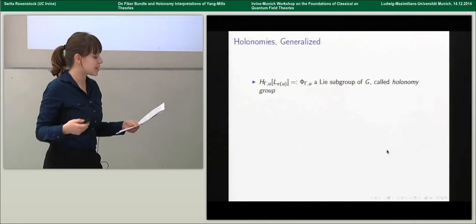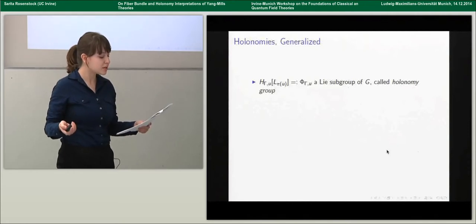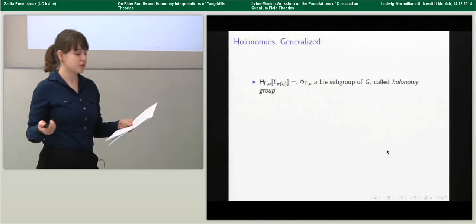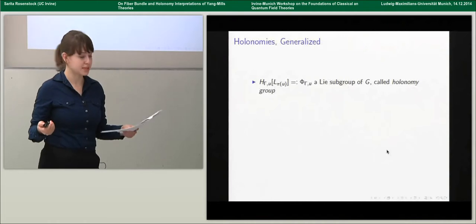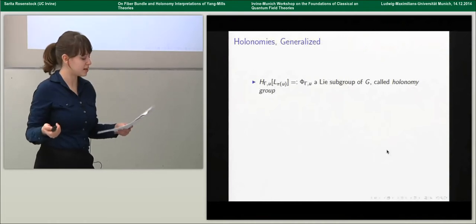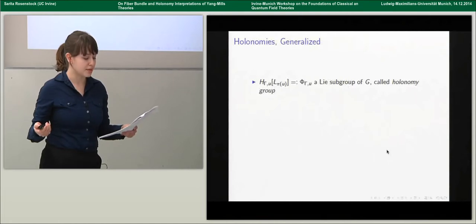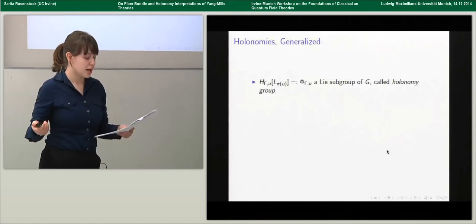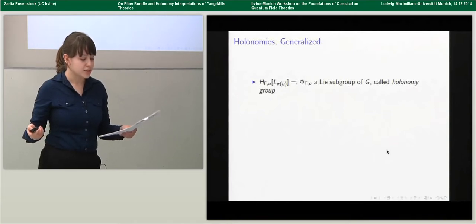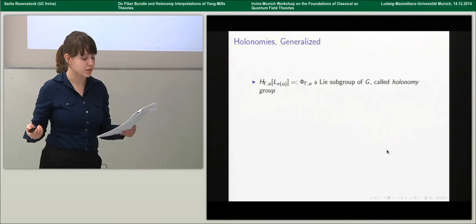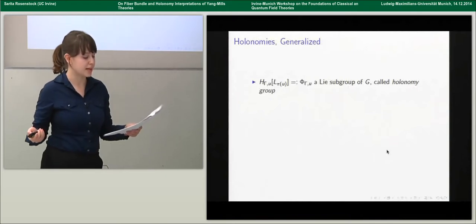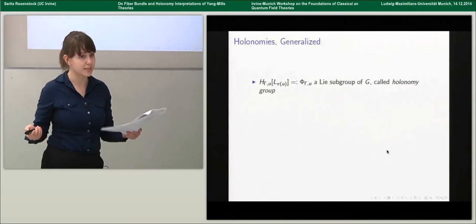Given some element u of our principal bundle, the image under the holonomy map of the set of spacetime loops based at the projection π(u) is always a Lie subgroup of the structure group G, called the holonomy group. This is because constant loops always map to the identity element of G, reverse-oriented loops always map to inverse elements, and the holonomy of the composition of loops is the composition of the holonomies of each loop.